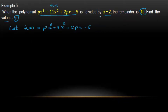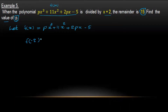When f(x) is divided by x plus 2, by the remainder theorem, x plus 2 equals zero means x equals minus 2. So the remainder is f(minus 2), and f(minus 2) equals 15.